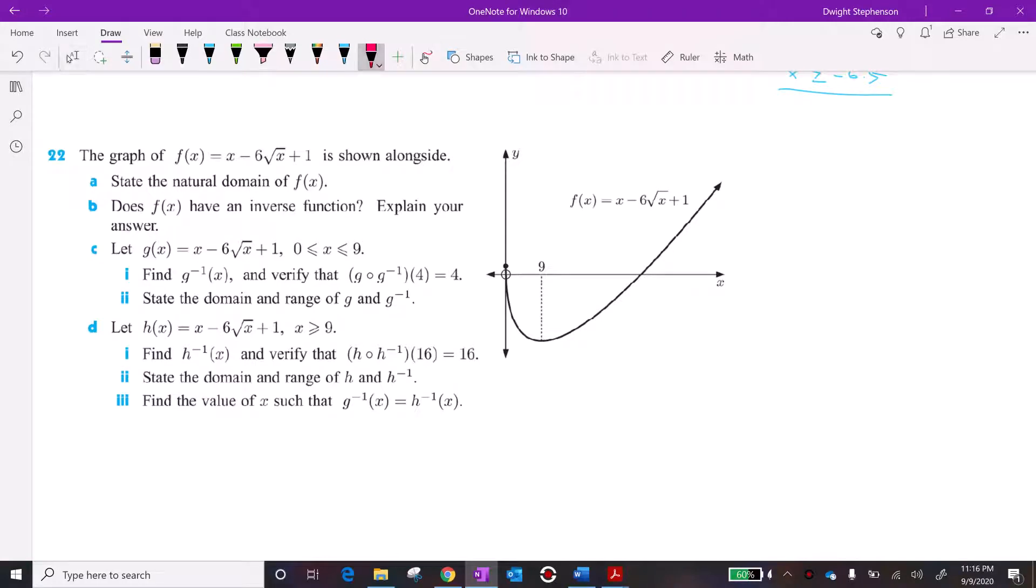So we're going to go over number 22. We're given this function here and its graph, and we're asked to state the natural domain of f(x). As you can see from the graph, x is only greater than or equal to zero. You can also look at the equation and know that because of this square root, you can't plug in any negative numbers.